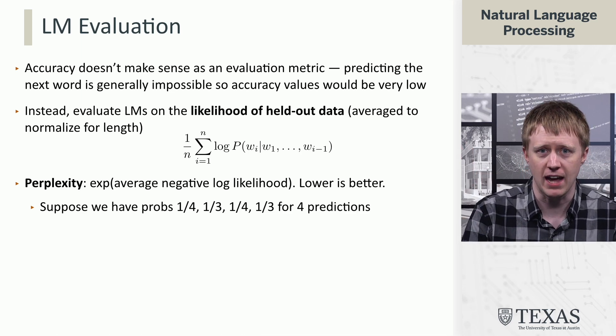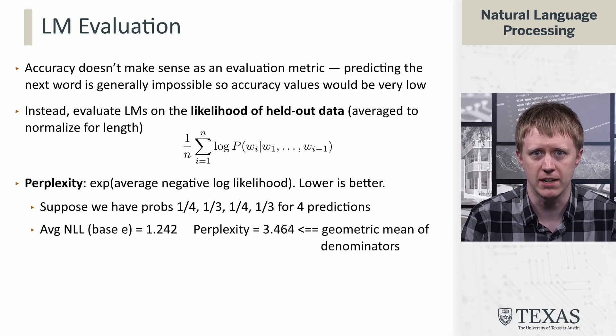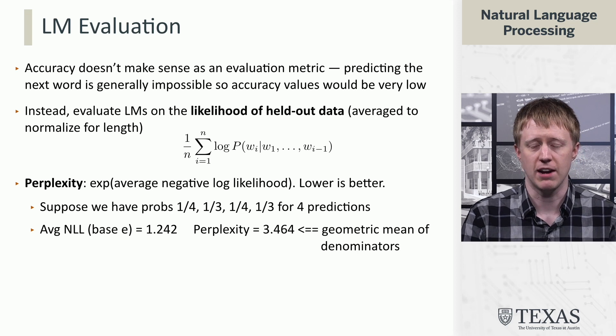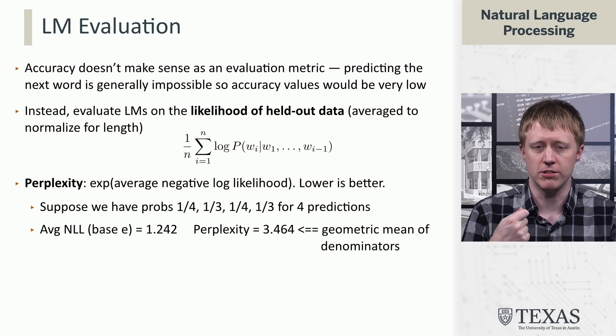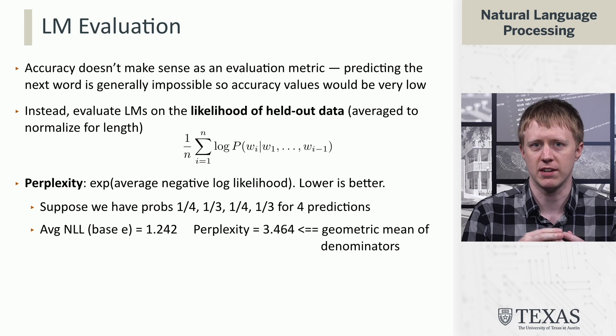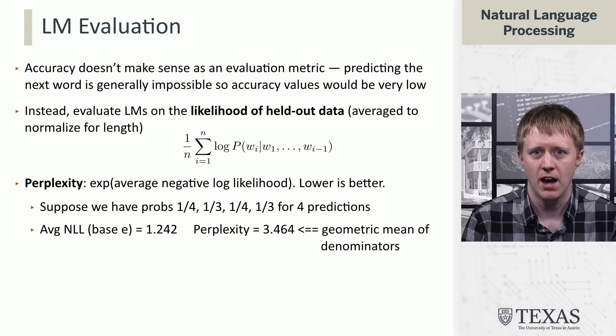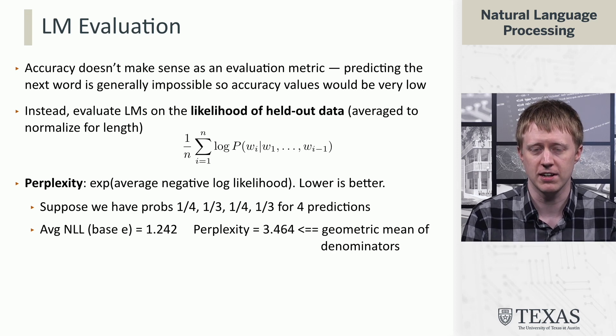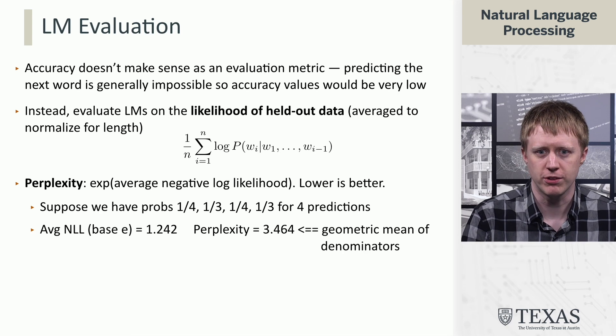And you can think about that as the average of these denominators. Now, rather than the arithmetic mean, the perplexity computes the geometric mean, since this averaging is happening in log space. But basically, the perplexity of a language model assigning these probabilities is 3.464. So it's a somewhat intuitive metric.